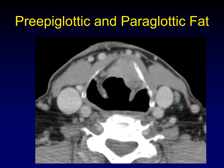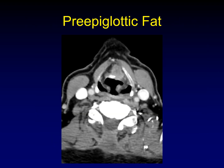Here's an example of a tumor involving both the preepiglottic fat — this is the petiole of the epiglottis — those are the aryepiglottic folds in the preepiglottic fat, coming out laterally to the paraglottic fat, with relative sparing of the paraglottic fat on the contralateral side. This is really important to establish radiologically because it will often render these patients non-surgical, preventing a partial laryngectomy and forcing a total laryngectomy.